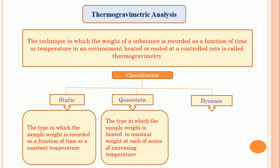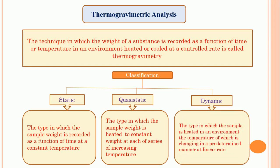The last type is dynamic thermogravimetry. This is the type in which the sample is heated in an environment, the temperature of which is changing in a predetermined manner at a linear rate. All conditions are initially set and predetermined, and the substance is heated at that particular rate — that is called dynamic thermogravimetry. So these are the three classifications: static, quasi-static, and dynamic thermogravimetry.